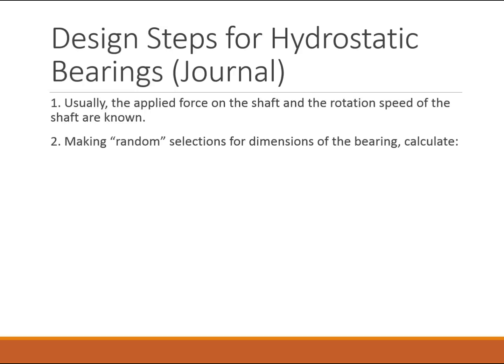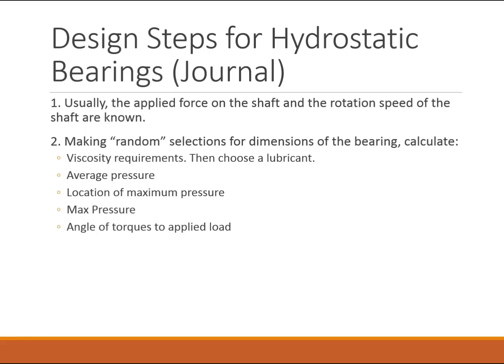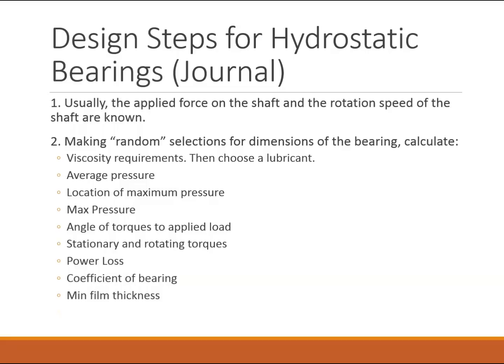Here are the steps to design a hydrodynamic bearing. The applied force on the shaft and rotational speed are usually already known; what we're looking for are diameters and clearances. Starting with an initial selection, we calculate the viscosity requirements to choose a lubricant, then find the average pressure, the location of maximum pressure, the maximum pressure, the angle of torque relative to the applied load, stationary and rotating torques, power loss, and the bearing coefficient. This gives us the minimum film thickness, and finally we apply a factor of safety to ensure the film never gets too thin and the part doesn't wear out.